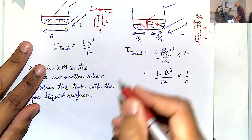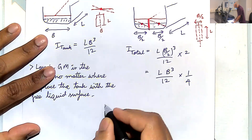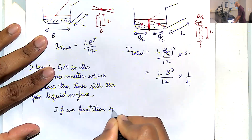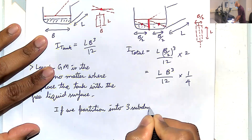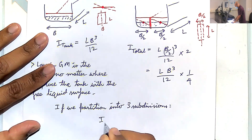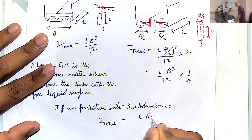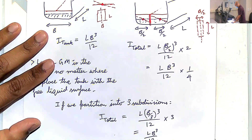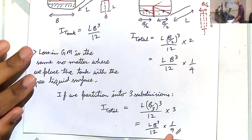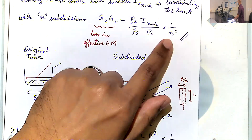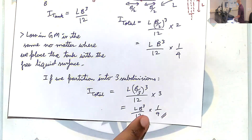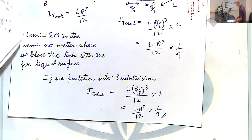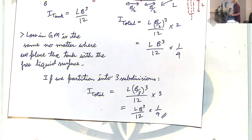That's why we have the 1/n² term in the general formula. Two subdivisions gives 1/4, three subdivisions gives 1/9. We'll do an example in a bit, but first let me come back to the installation questions in the chat.